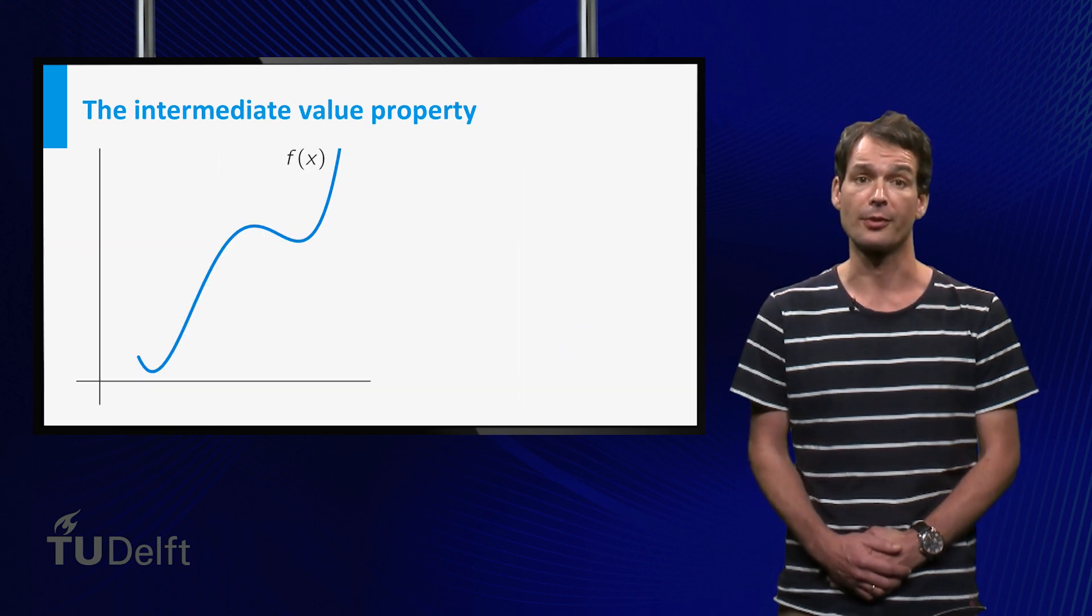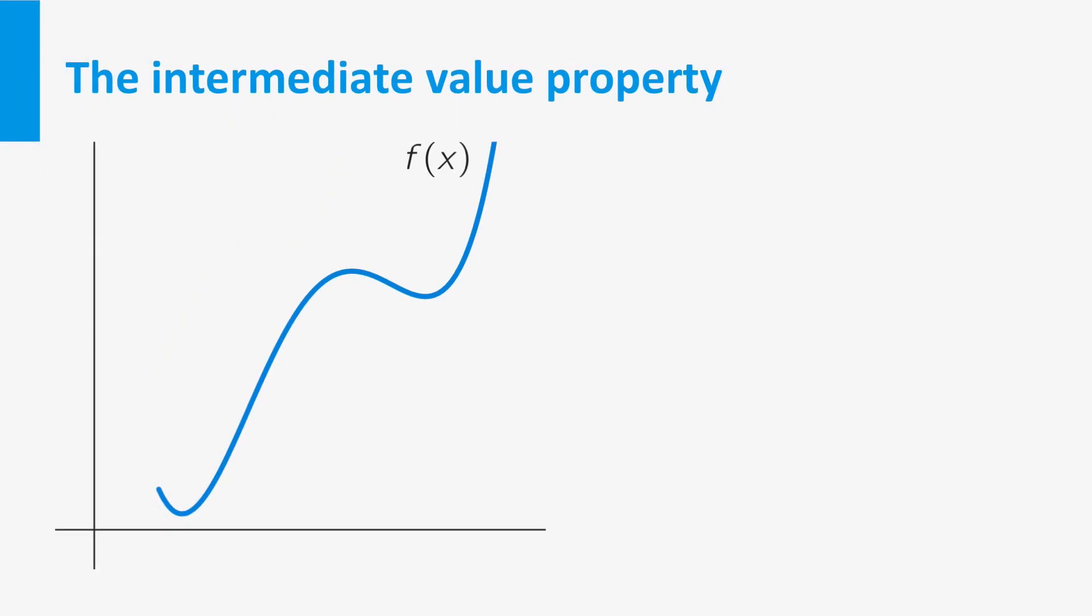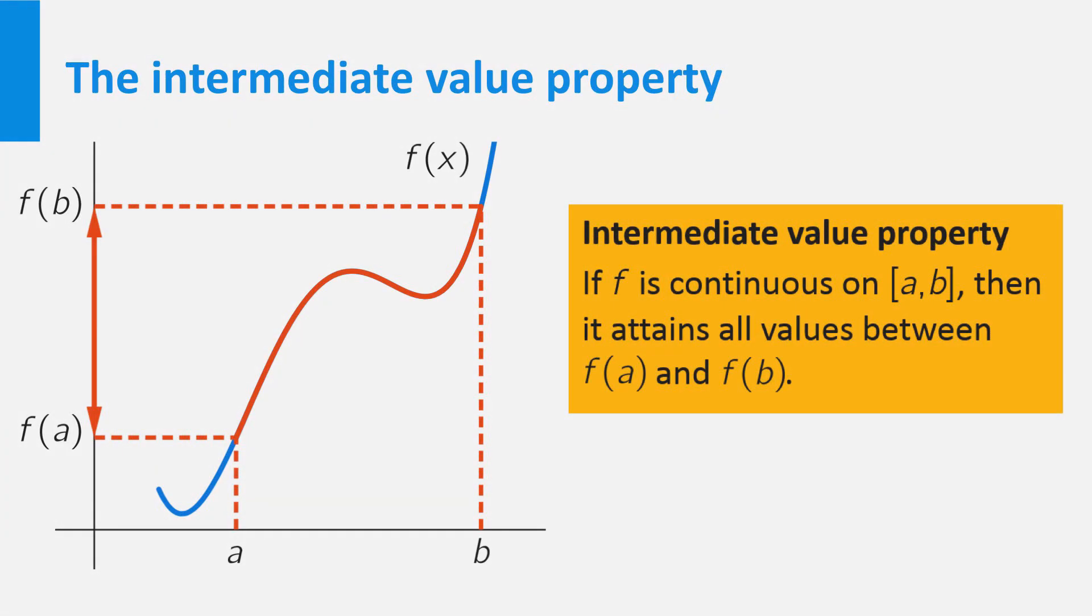For a continuous function, this never happens. To be more precise, a continuous function has the intermediate value property. This says that if f is a continuous function on a closed interval, then it attains all values between f of a and f of b.